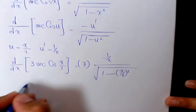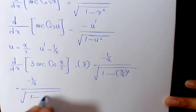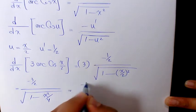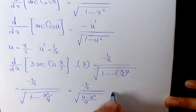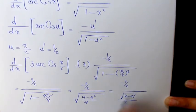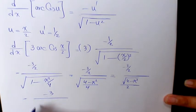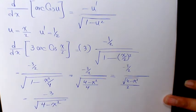Now we simplify: that's going to be negative 3 over 2, over square root of 1 minus x squared over 4. This simplifies to negative 3 over 2, times square root of 4 minus x squared over 2. This 2 and 2 cancel out, and the answer is going to be negative 3 over square root of 4 minus x squared.